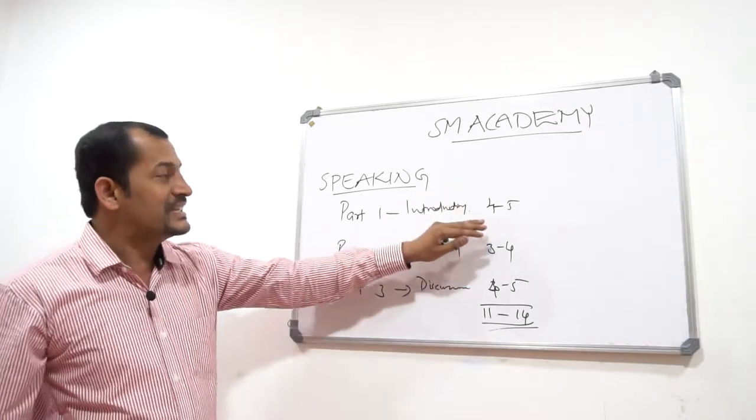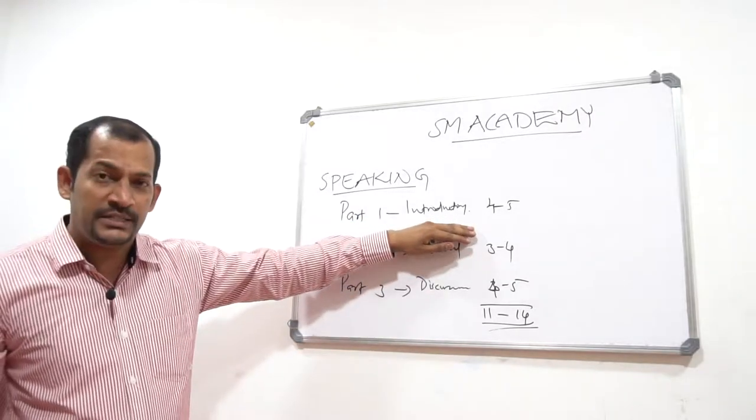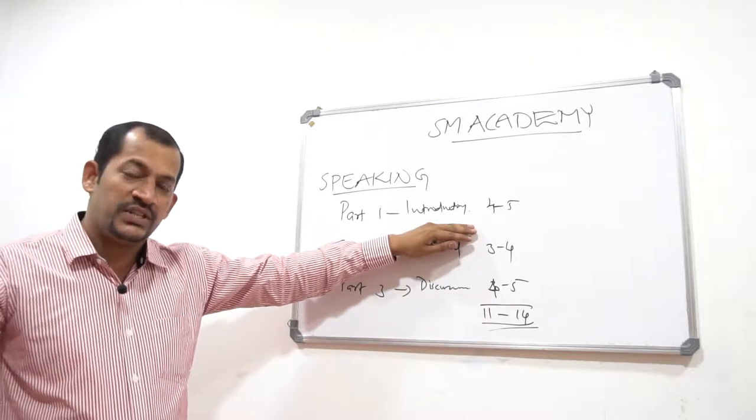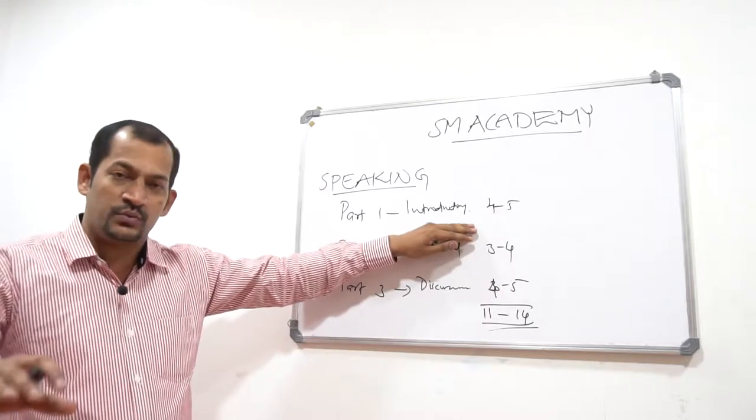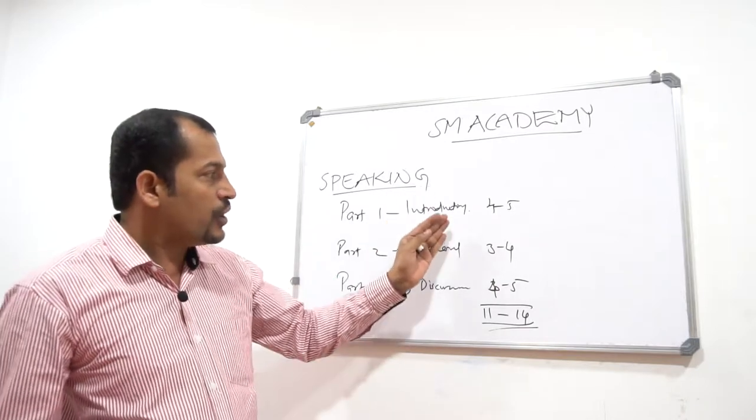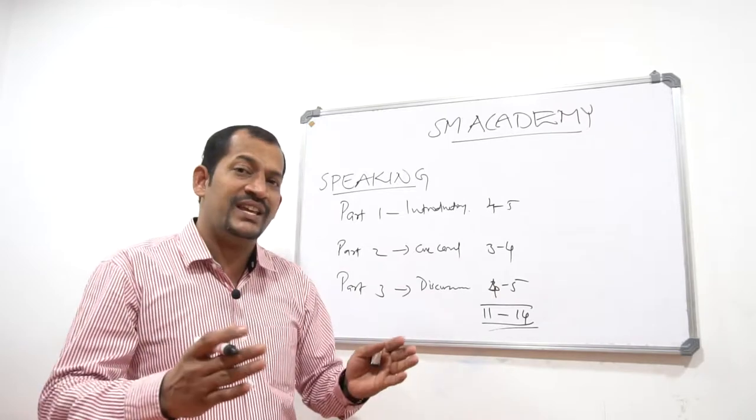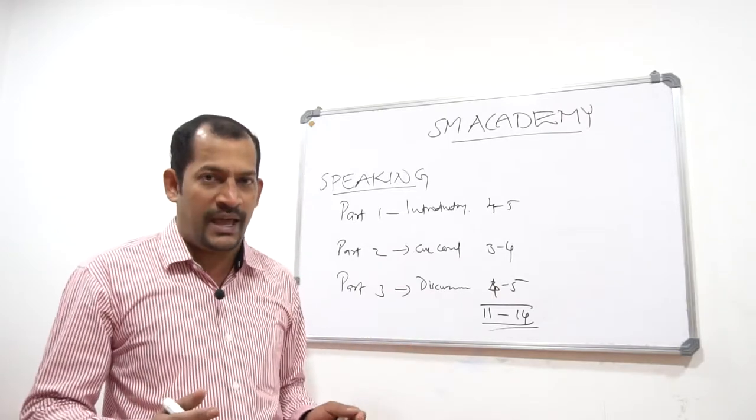Coming back to the details of each part. In Part 1, the examiner verifies your identity by checking your passport. He or she switches on the recorder to record your voice. This is the round where you can break your ice, introduce yourself, and wish the examiner.